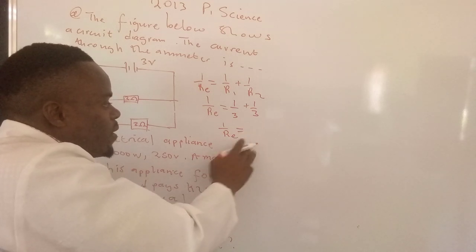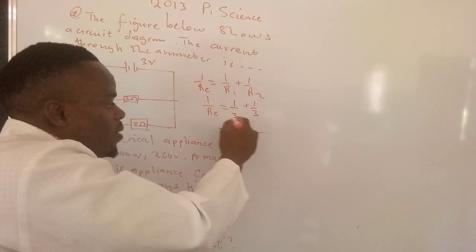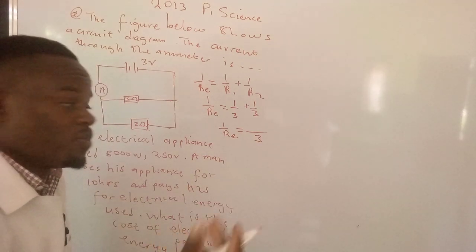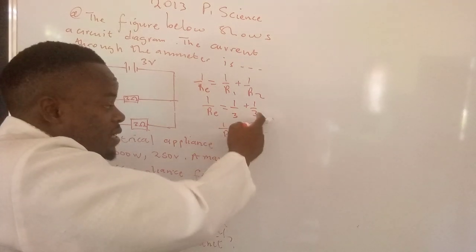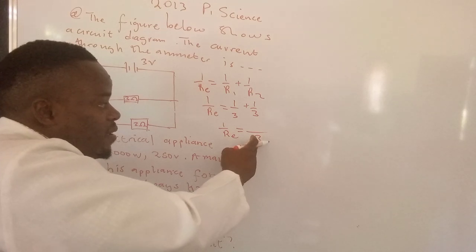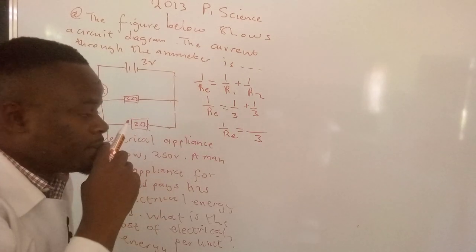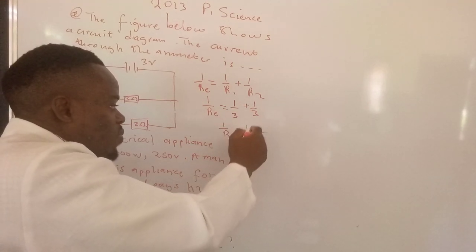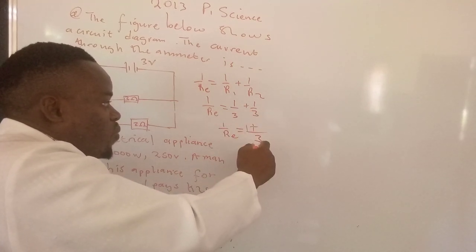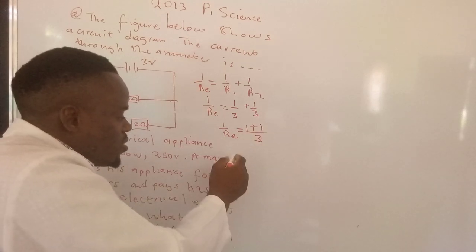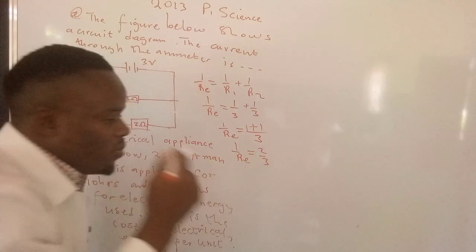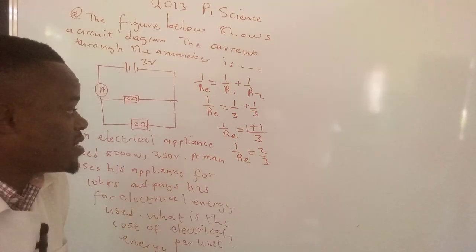The lowest common multiple is 3. We simply pick the denominator and add the numerators. 3 into 3 that's 1, 1 times 1 plus 1, and 3 into 3, 1 times 1. So 1 over RE equals 2 over 3.